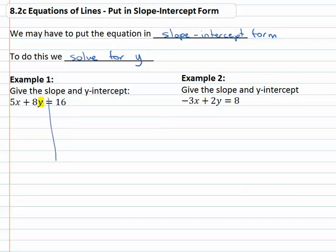First we get rid of anything that doesn't have a y on it by subtracting the 5x from both sides. That leaves 8y equals, now these are not like terms so we can't combine them. We could write 16 minus 5x but remember with slope-intercept we like the x part to come first. So I'm going to write the minus 5x first plus 16.